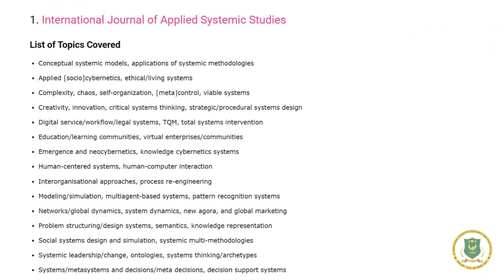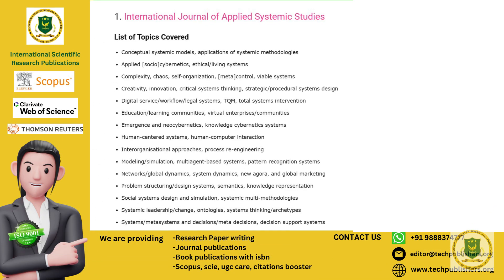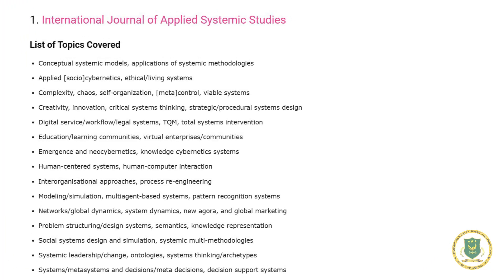Number one: International Journal of Applied Systematic Studies. Topics covered include conceptual systematic models, applications of systematic methodologies, applied cybernetics, ethical or living systems, complexity, chaos, self-organization, meta-control, viability systems, creativity, innovation, critical systems thinking, strategic or procedural system design, digital service or workflow or legal systems, TQM, total system intervention, and education or learning communities.